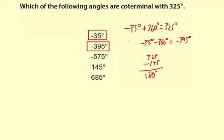How about 685? If I do 325 plus 360, 685. So this one is also coterminal.